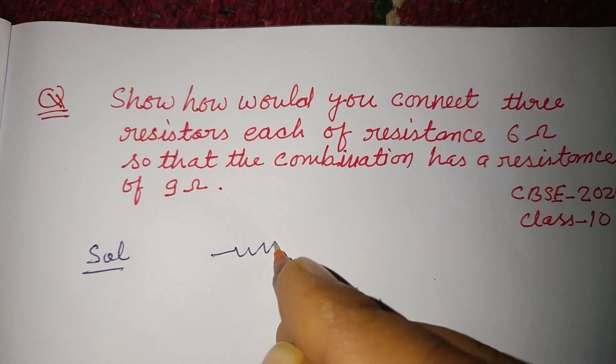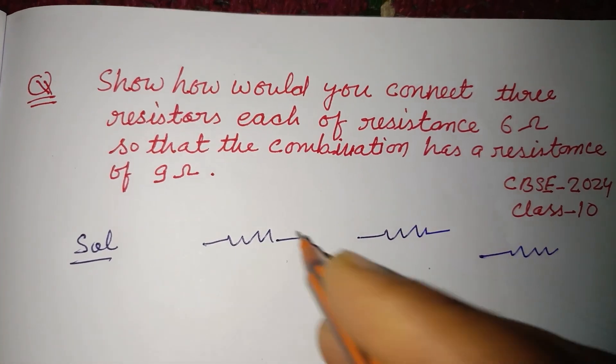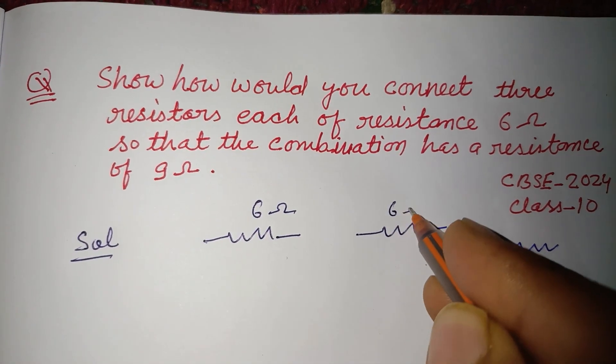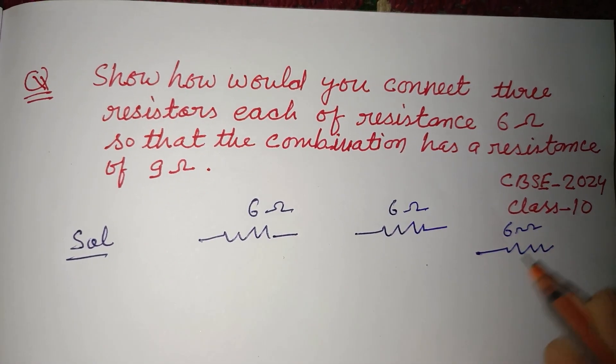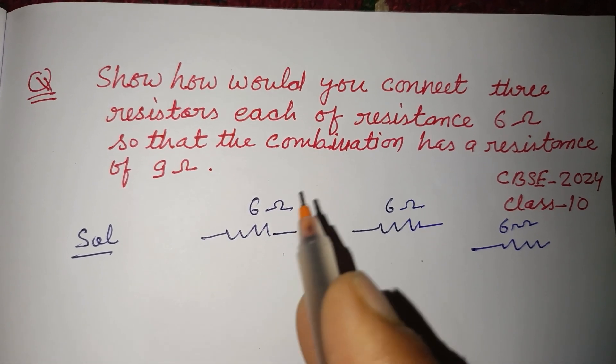Three resistors are given, each of 6 ohms, and we want to find out a resultant resistance of 9 ohms.